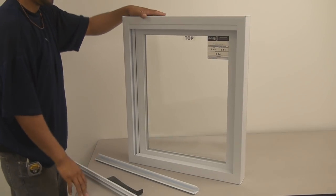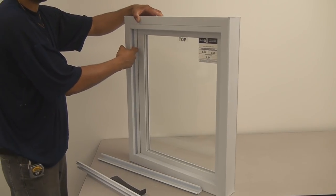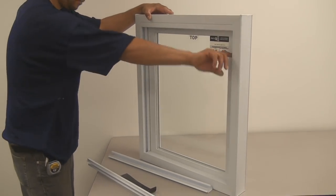There are two pre-drilled screw holes on each side of the picture window. Lange exterior provides screws for installation.